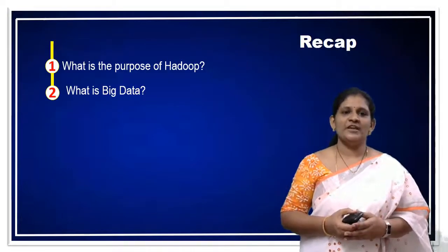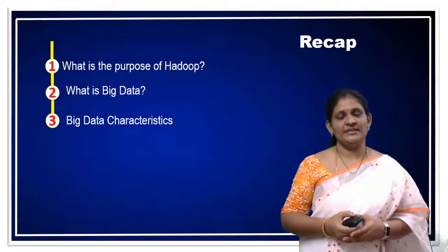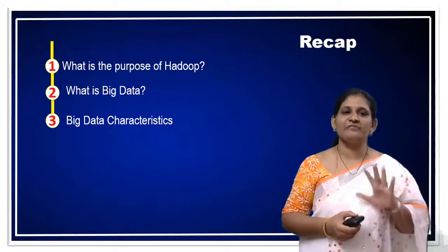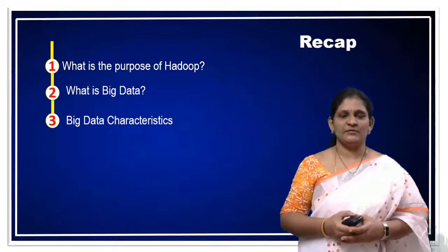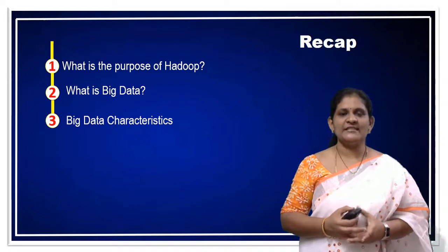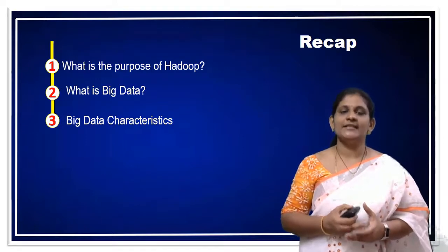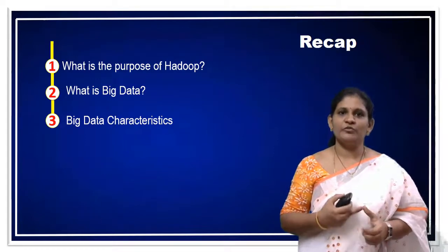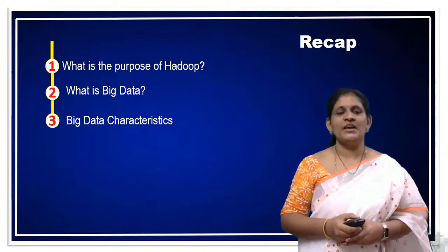We also discussed what are the characteristics of Big Data. Big Data characteristics can be represented by using five Vs. The first V stands for volume, second V velocity, third V variety, fourth V veracity, and fifth V is value.